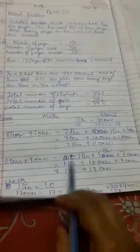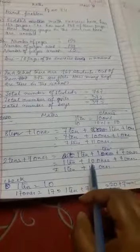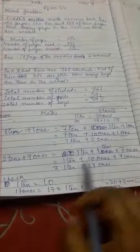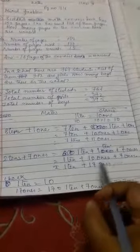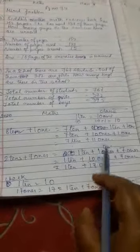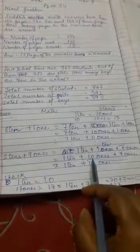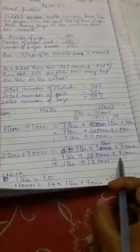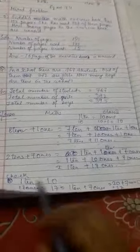1 ten, how many? 10 ones, 7 ones. 1 ten is to add up to 17 ones. So 1 ten you are giving it here. 1 ten means 10 ones and 7 ones. 10 and 7 is 17 ones.